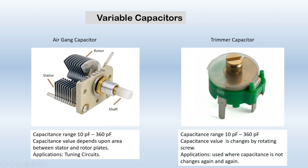Next we have the trimmer capacitor. As shown in the diagram, it is very small in size and has a screw on it. By rotating the screw we can change the capacitance value from 10 pF to 360 pF. It is used in applications where the capacitance does not need to be changed frequently — once the capacitance is fixed, it remains set. In such applications we use the trimmer capacitor.